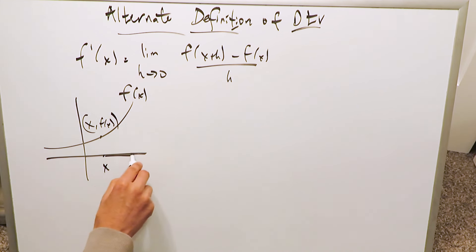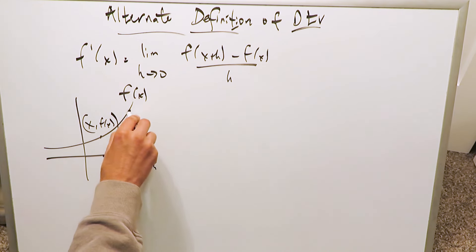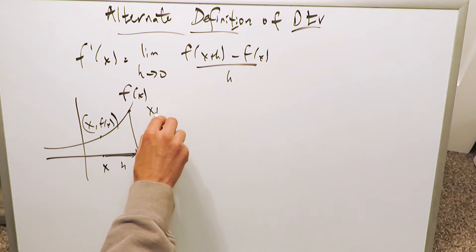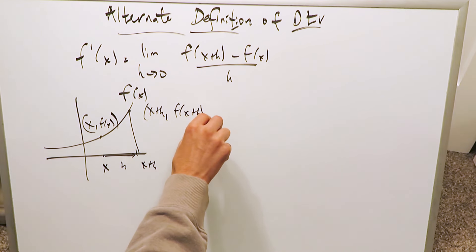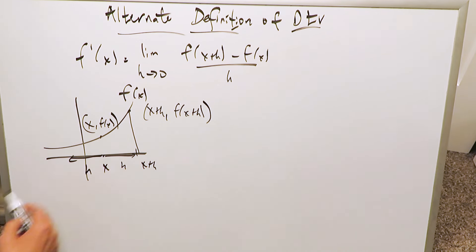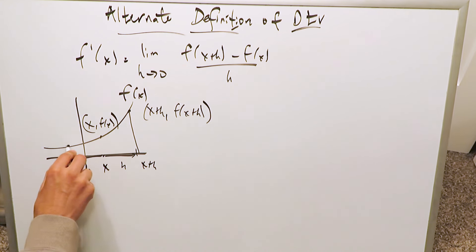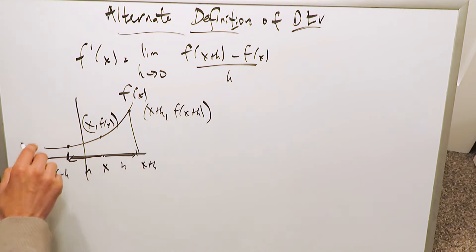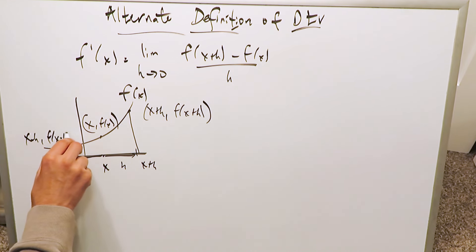If you were to go h units on this side, you know you're looking at x plus h because you're h units away. This specific point over here would be x plus h comma f of x plus h. However, from this point of interest, if you were to go h units in the other direction, this point would then be x minus h, and the point on your curve would be represented as x minus h comma f of x minus h.